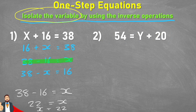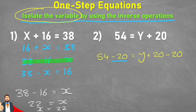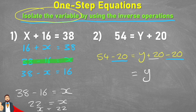I have 54 equals y plus 20, and I'm trying to get rid of that plus 20, so I need to put a negative 20 on both sides. I'll write 54 minus 20 on the left side as well, keeping the equation balanced. On the right side, y plus 20 minus 20 leaves just y. And 54 subtract 20 on the other side leaves 34, so y equals 34.